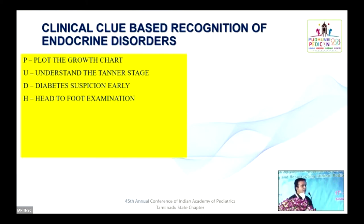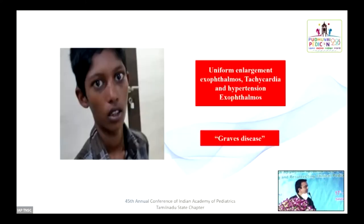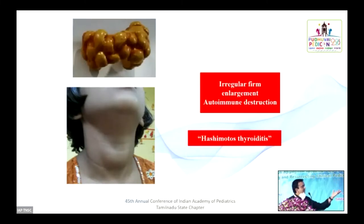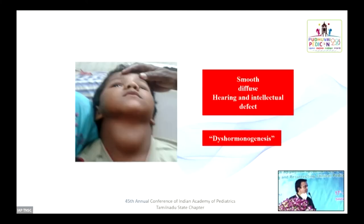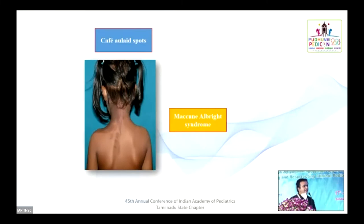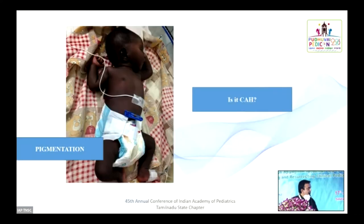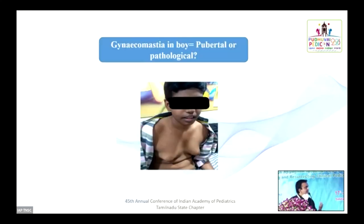The fourth clue is a meticulous head-to-foot examination. A child with goiter, prominent eyes, tachycardia, hypertension, and exophthalmos — the diagnosis is Graves' disease. A firm, irregular, enlarged goiter points to Hashimoto's thyroiditis. A smooth goiter with hearing defect and intellectual defect suggests dyshormonogenesis. A child with precocious puberty and café-au-lait spots points to McCune-Albright syndrome. A pigmented child with low blood sugar suggests probable CAH. Gynecomastia with possible pathological cause should be evaluated further.